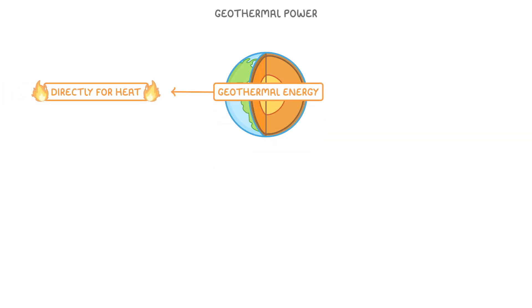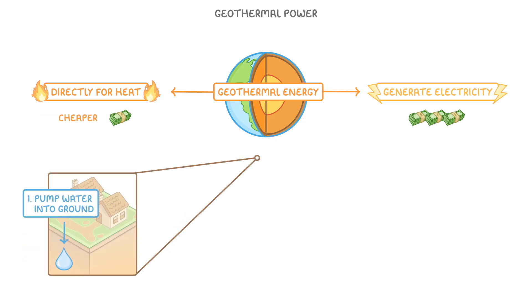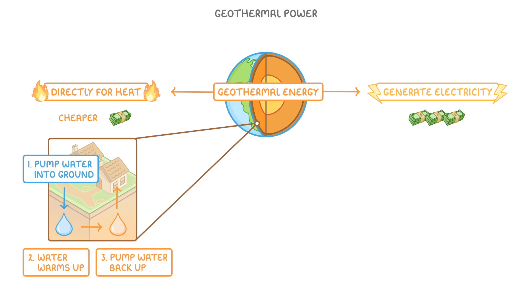We can use geothermal energy either directly for heat, or to generate electricity. Heating is the cheaper of the two, and involves pumping water down into the ground, allowing it to warm up, and then pumping it back up to the surface to heat our homes.